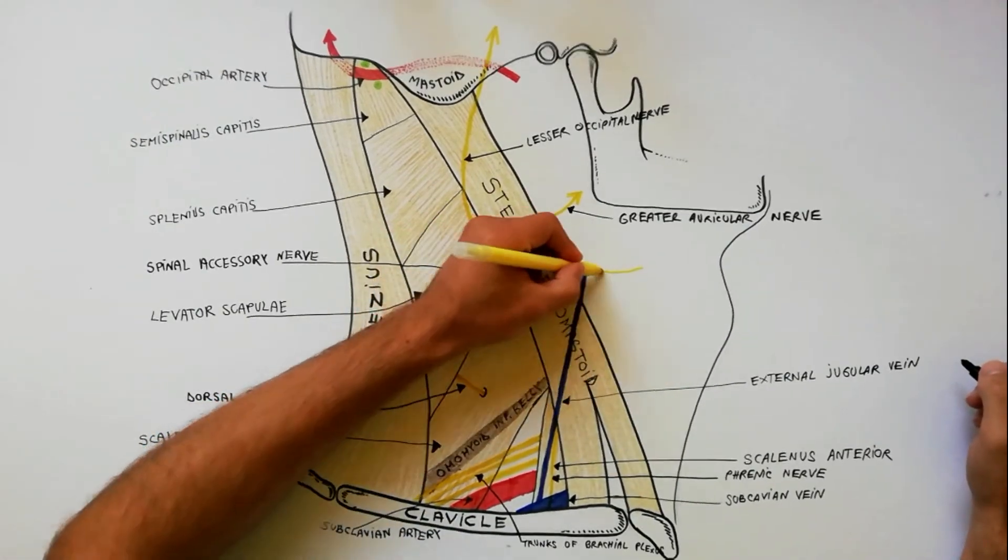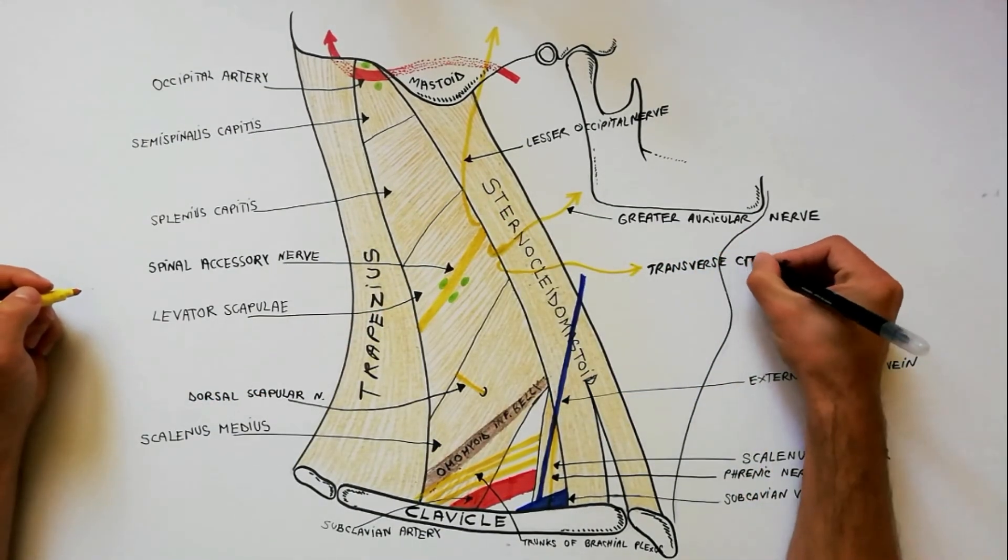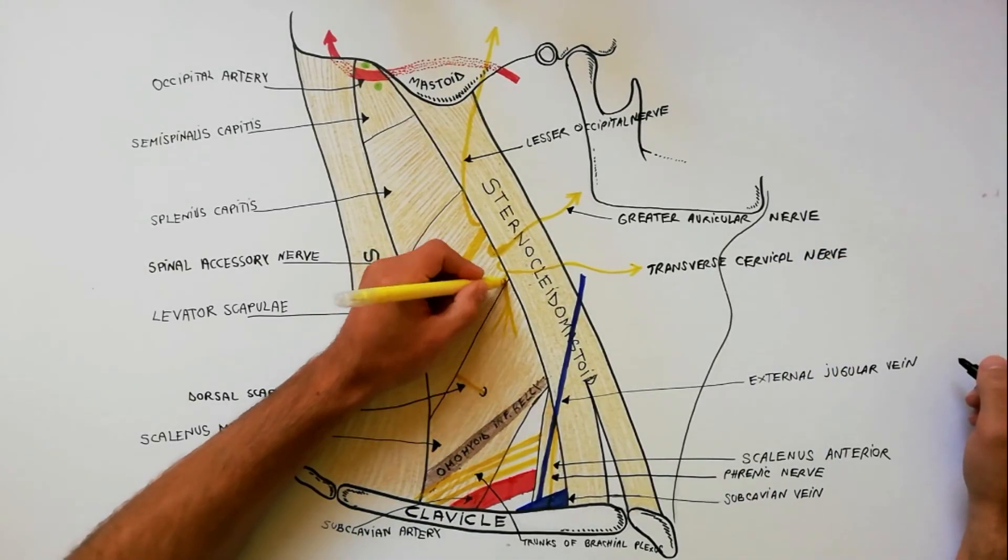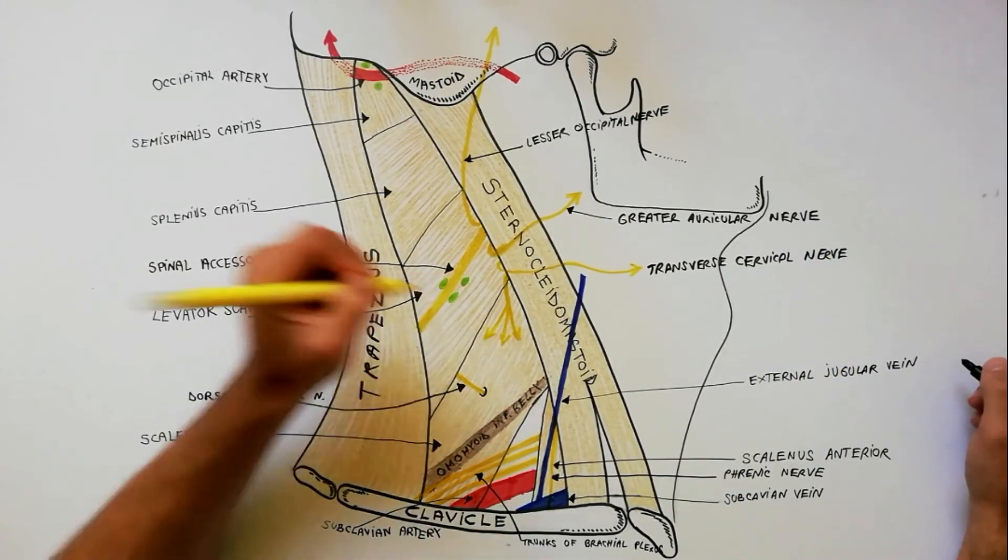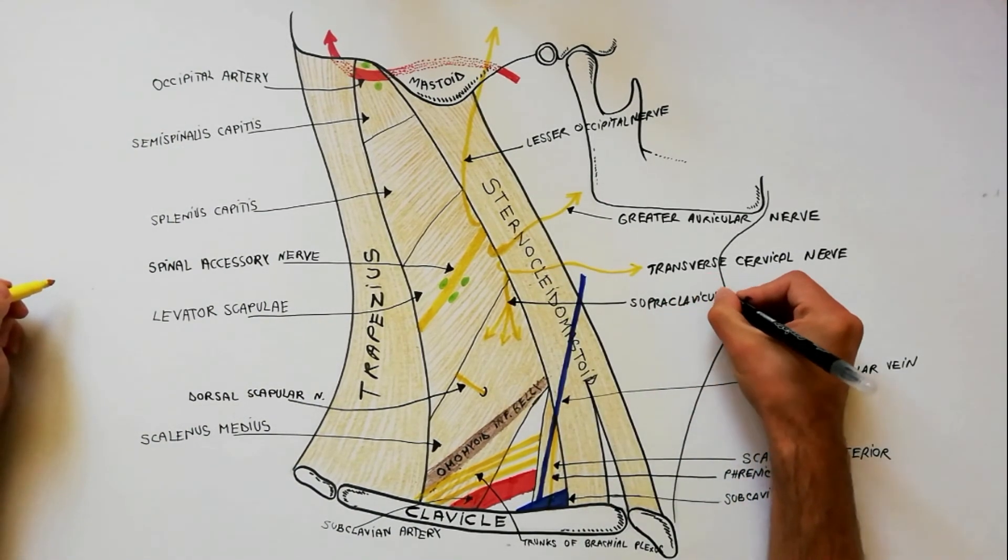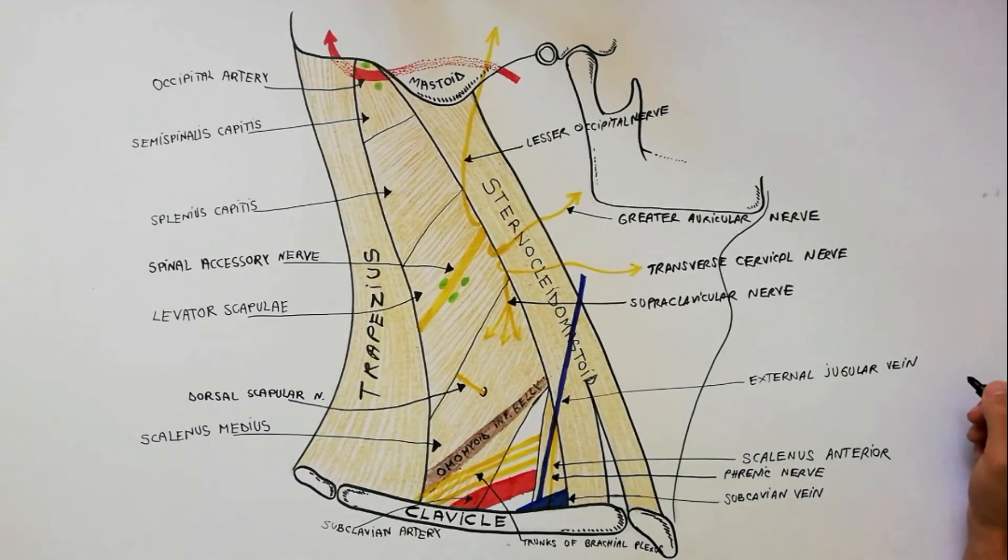The transverse cervical nerve is directed anteriorly. And the supraclavicular nerve, which is directed inferiorly. This nerve soon splits into three branches.